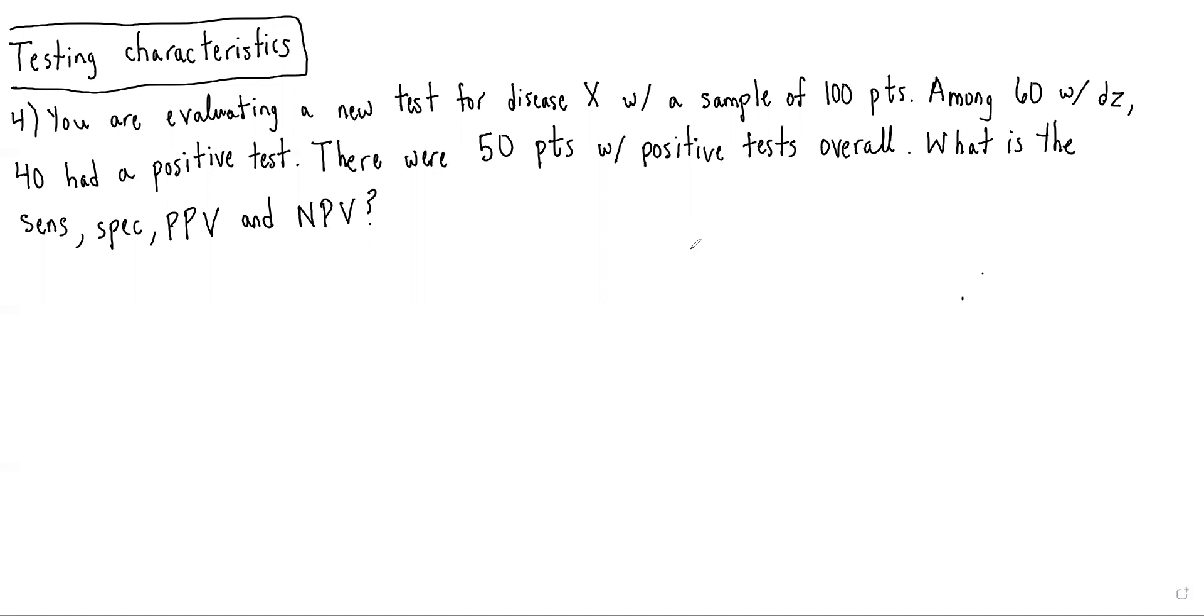In these questions, we need to take the numbers presented in the vignette and put them into a two-by-two table that can be easily interpreted. My recommendation is to draw the two-by-two table for each of these questions and to draw it the same way every time. I always put disease status on top and test result on the side. That way, if I get flustered or I don't have time on the test, I have a systematic, rigorous way that I approach every question, and therefore I'm less prone to make a mistake.